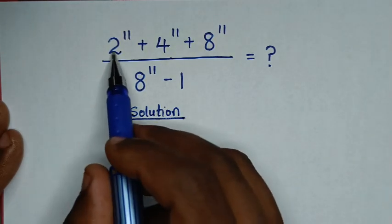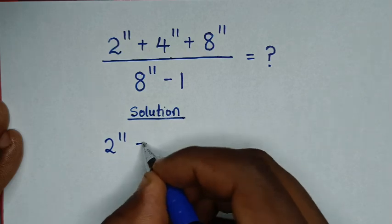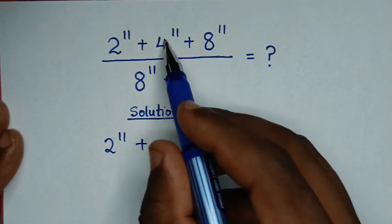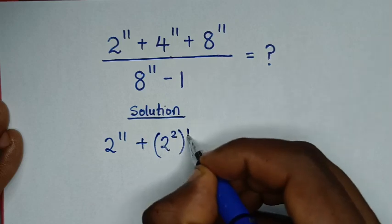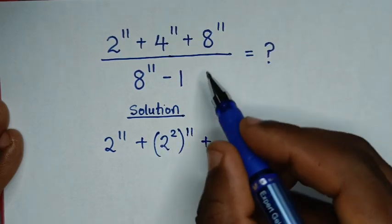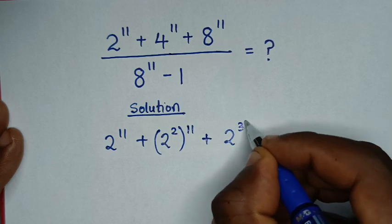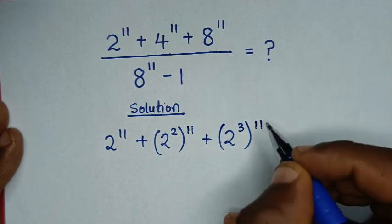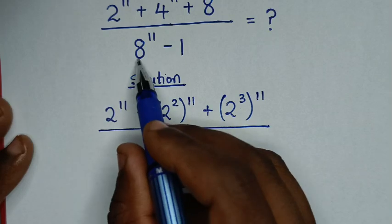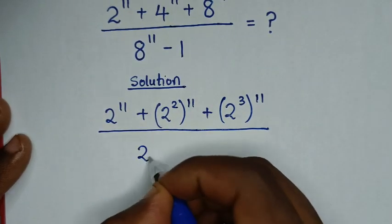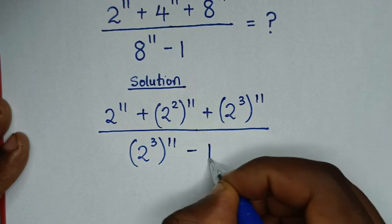From our problem, which is 2 power 11, plus 4 power 11 — 4 is the same as 2 squared, bracket power 11 — then plus 8 power 11, where 8 is the same as 2 power 3, bracket power 11, then over 8, which is also 2 power 3, bracket power 11, minus 1.